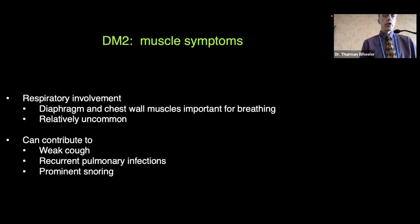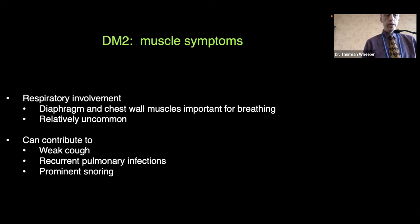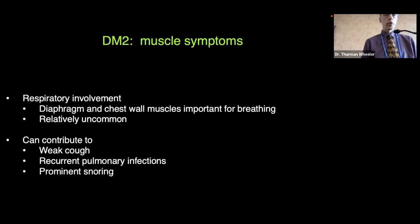Muscle involvement can also include the respiratory muscles — the diaphragm and chest wall muscles important for breathing. In DM2 this is relatively uncommon, which is different from DM1. If present, respiratory involvement can manifest as a weak cough, recurrent pulmonary infections, and prominent snoring.